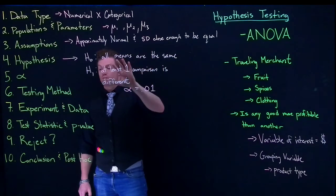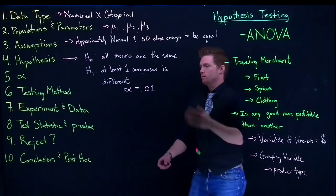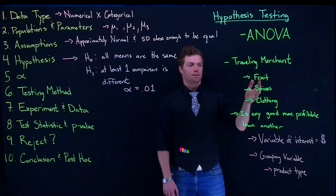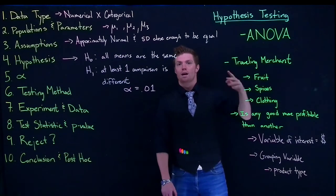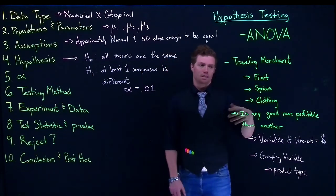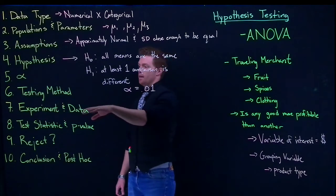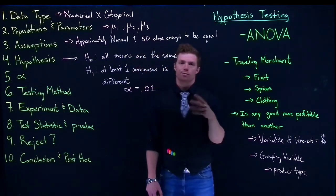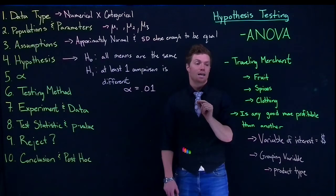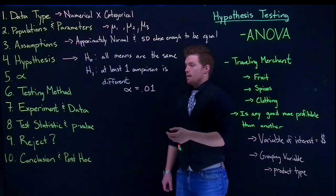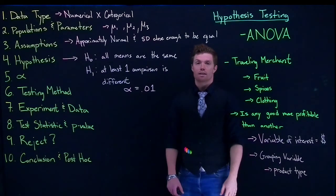Once we have this stuff all set up, we're ready to run our experiment to collect our data. We'd have to go through the different towns to sell through, and measure how much money we make when we sell fruit, spices, and clothing, and compare them to one another. For our class, most of that — step seven — has already been done for us. Then we would be ready to go on and do our test statistics and p-values.